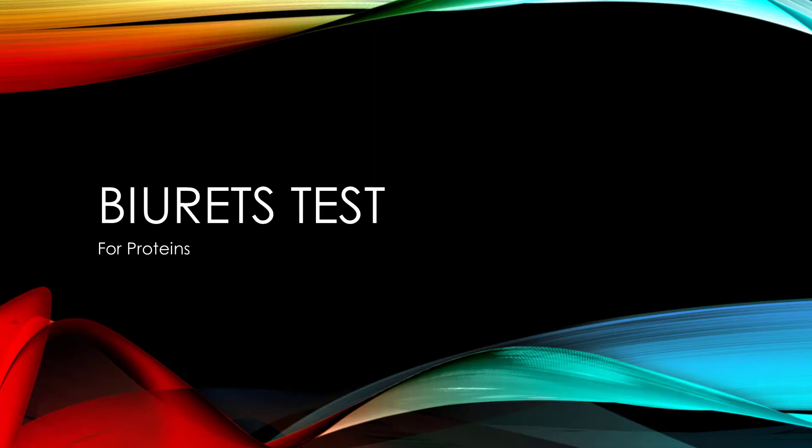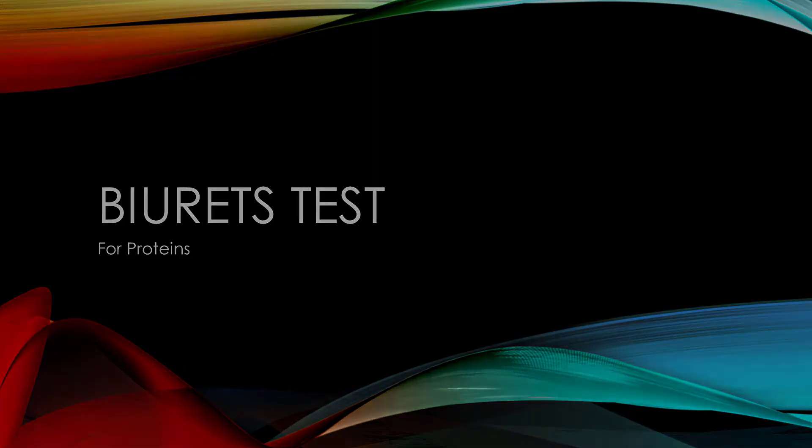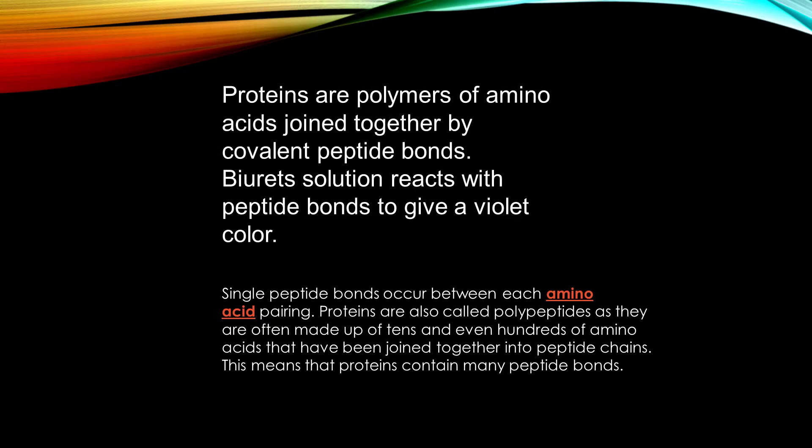Today we will be performing the Biuret test for proteins. Proteins are polymers of amino acids joined together by covalent peptide bonds. Biuret solution reacts with peptide bonds to give a violet color.